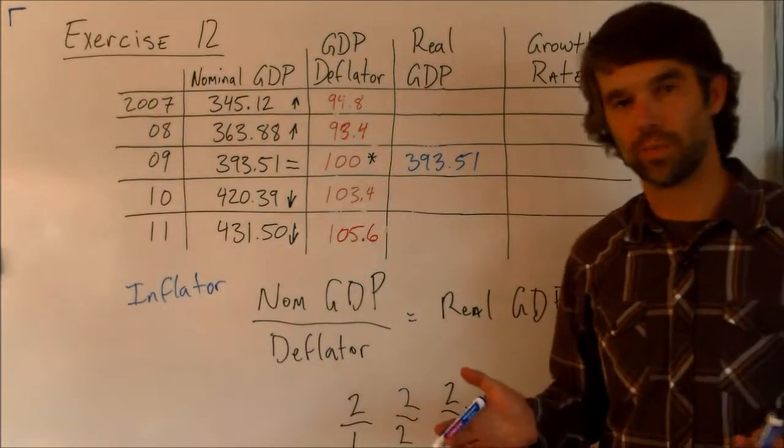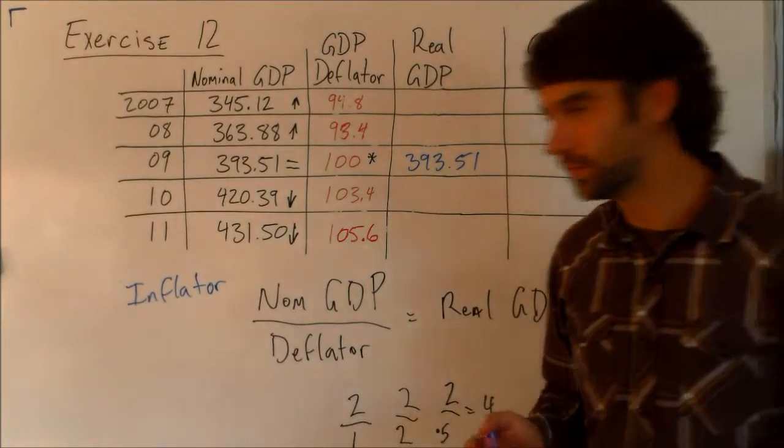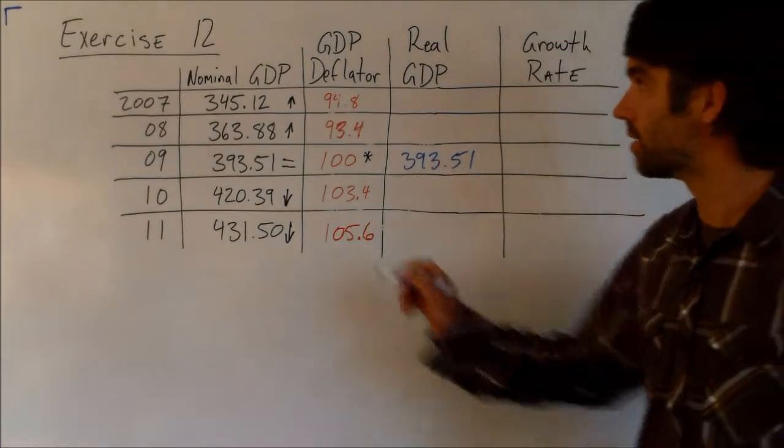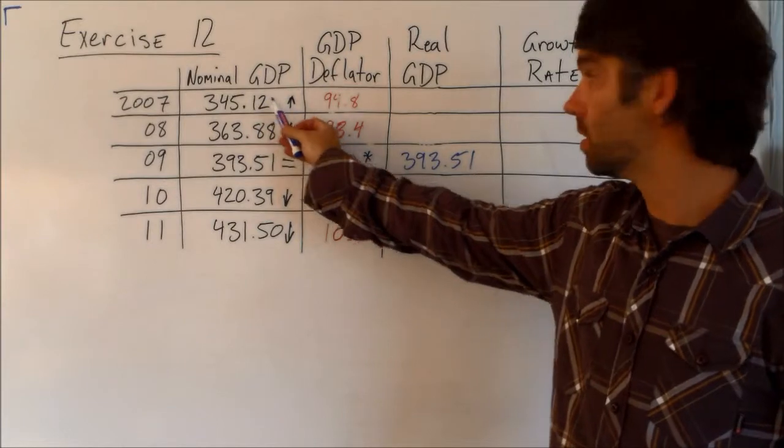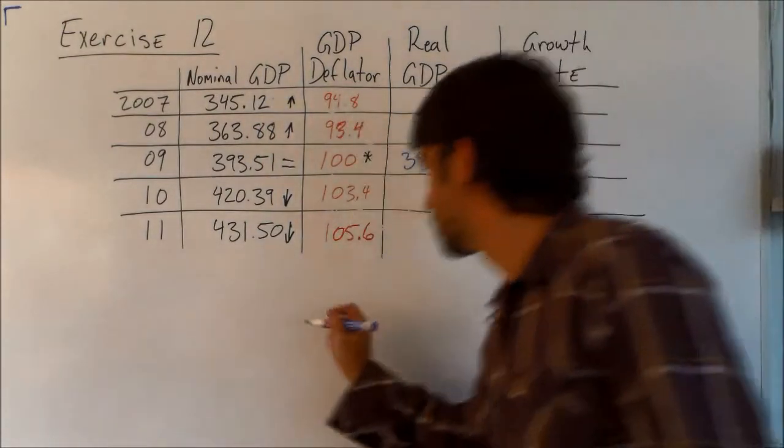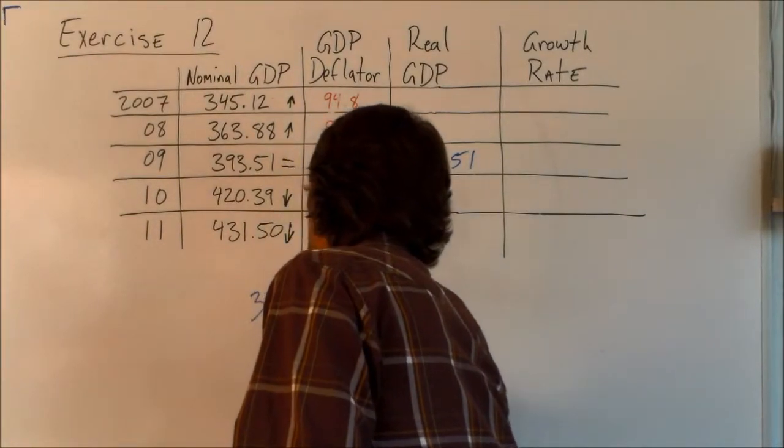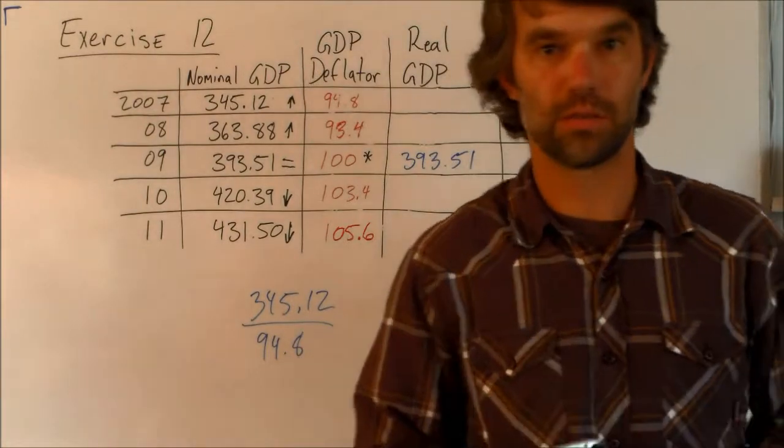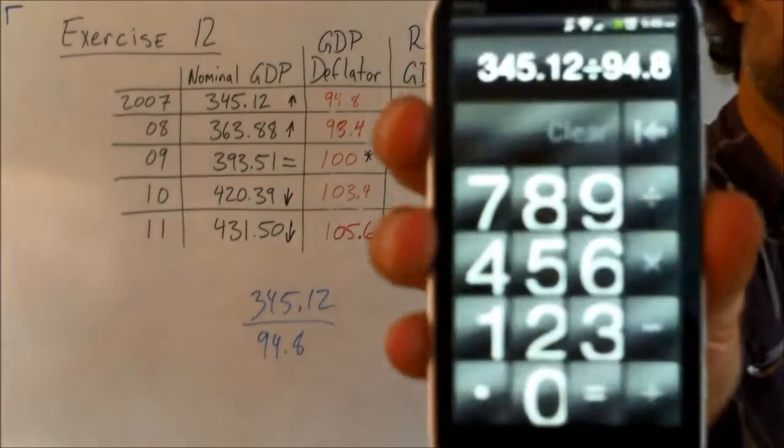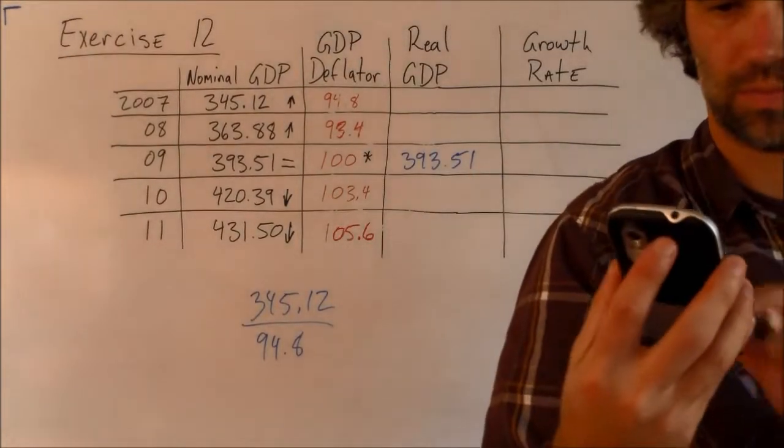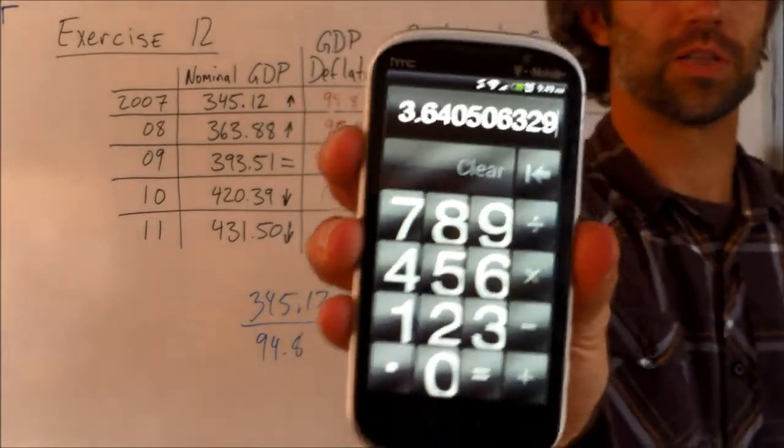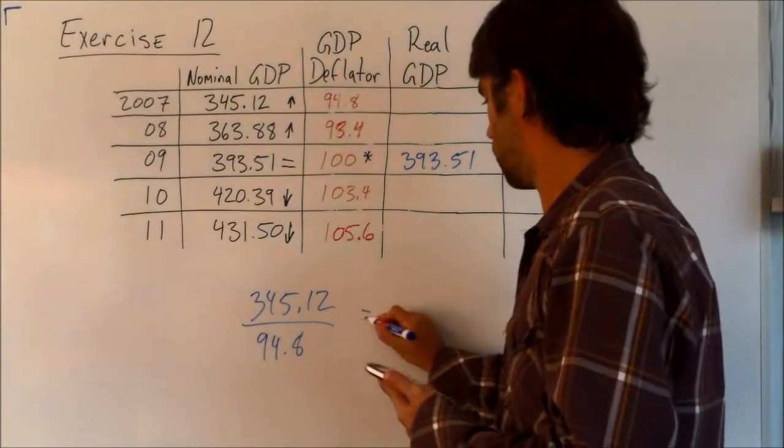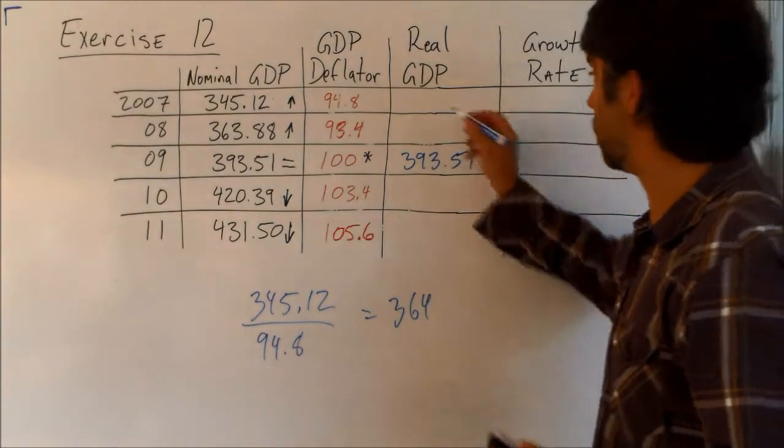Well, let's do a little math of the actual numbers and let's see what we got. So I'm just going to set up the first one and the rest, I'll just put the answers on the board. The first one, we're going to take 345.12 and divide it by its deflator, 94.8. And since you get to use a calculator, so do I. And we come up with 364. You can just round to two decimals. So that's going to go right up here.